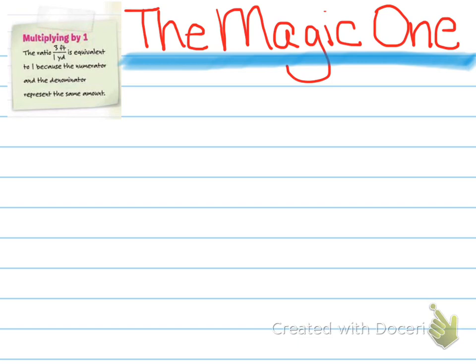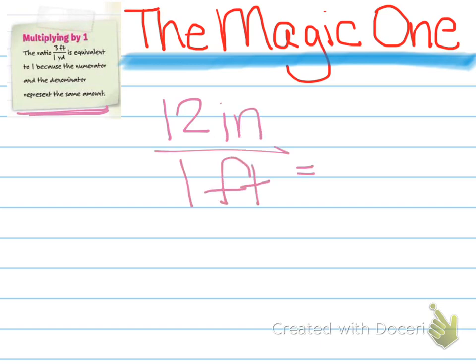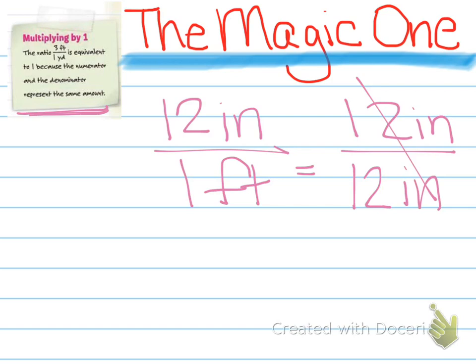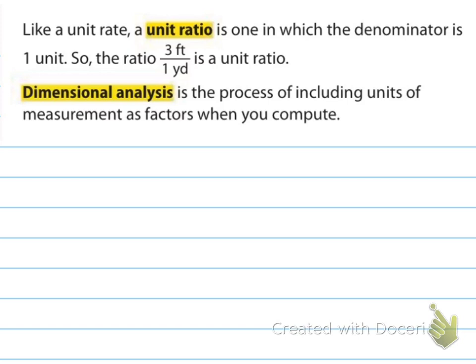I want to point out the sticky note here saying that multiplying by 1 — when you have a ratio of 3 feet and 1 yard, it is equivalent to 1 because the numerator and denominator represent the same amount. So 12 inches over 1 foot is the same as saying 12 inches over 12 inches, which makes 1. For definitions: a unit ratio is one where the denominator is one unit — the ratio 3 feet to 1 yard is a unit ratio. Dimensional analysis is the process of including units as measurements as you compute — that's where we cross-simplify.